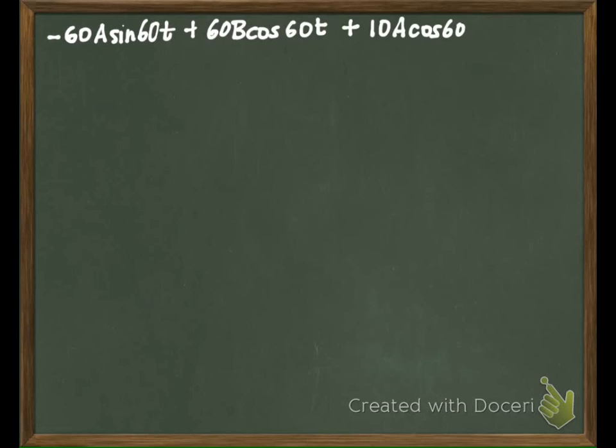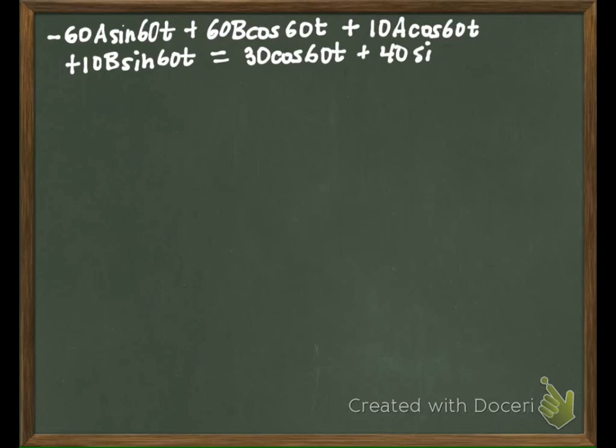So when I put that back in, we're going to get -60A sin 60t + 60B cos 60t + 10A cos 60t + 10B sin 60t, and we're told that that should equal our forcing function, which is 30 cos 60t + 40 sin 60t.